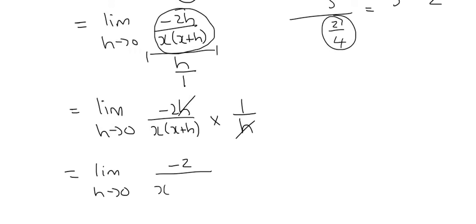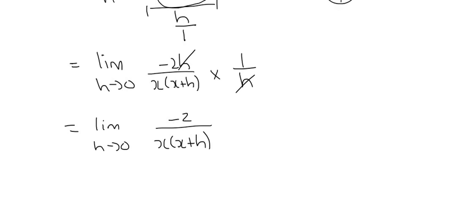Now that the h in the denominator has been cancelled, we can let h go to 0. That gives us -2 over x plus 0.